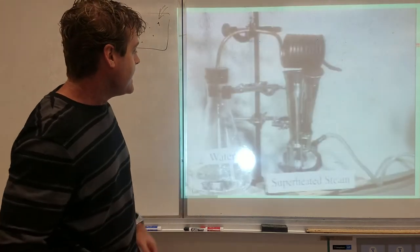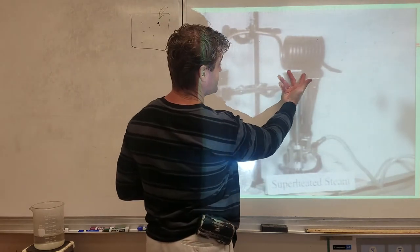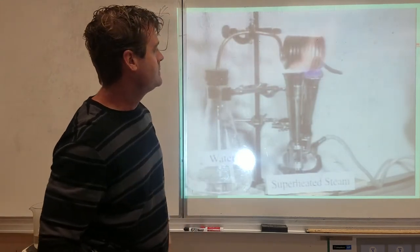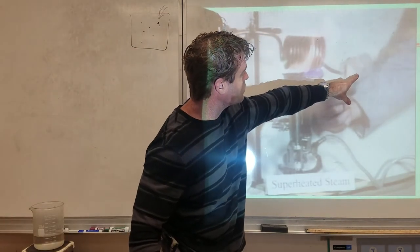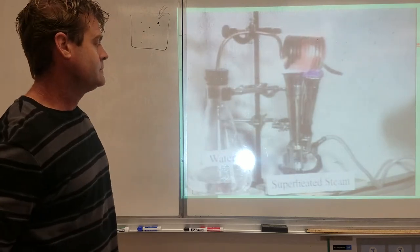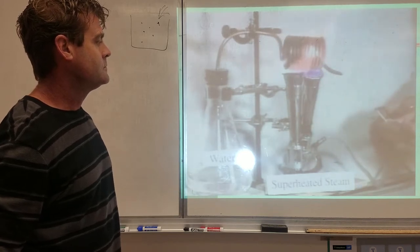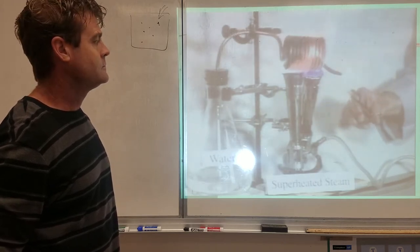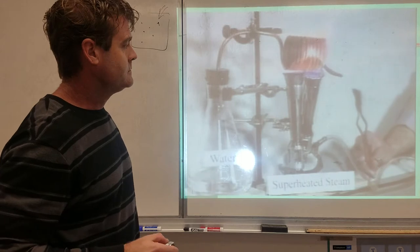Now they have the coil over a Bunsen burner to heat the steam to a very high temperature. The steam still condenses to liquid water in the beaker. Now look what happens — a match placed into the superheated steam ignites. The steel wool also glows brightly and reacts with the steam.